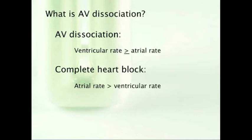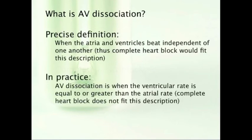In complete heart block, the atrial rate should always exceed the ventricular rate. The underlying mechanisms are completely different as well. Complete heart block, also called third degree AV block, is a disorder of the cardiac conduction system at the level of either the AV node, bundle of His, or Purkinje system. The ventricular escape mechanism that goes along with it occurs anywhere distal to that block.